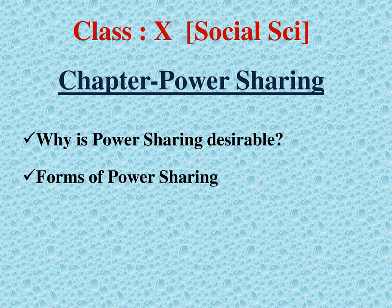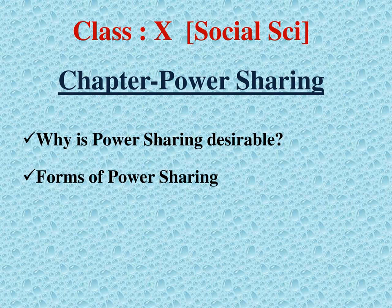Let's take the example of India. In India, the power is shared in various forms. The first form is among various organs of the government — meaning the power is divided such that the legislature, executive, and the judiciary do not impose their will on each other. India has an independent and integrated judiciary. This is called the horizontal division of power. The second is the division of power at different levels, called the vertical division of power.